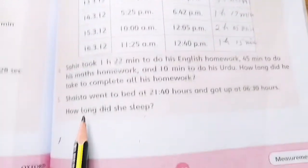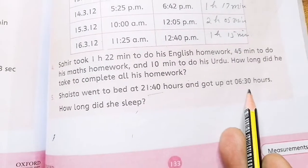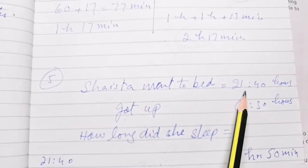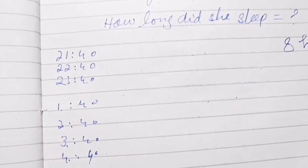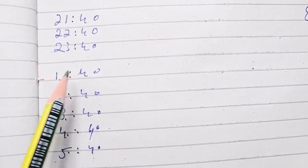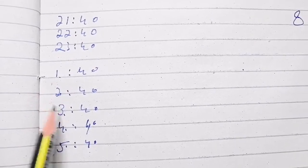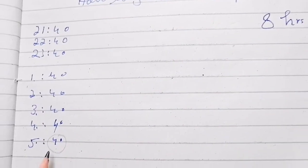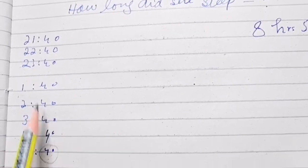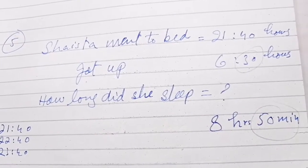Question 5: She went to bed at 2140 hours and got up at 6:30 hours. This uses the 24-hour clock. To find how long she slept, we count: 21, 22, 23 — that is the night time — then 1, 2, 3, 4, 5, 6, giving 8 hours. Then 40 minutes to midnight plus 30 minutes after equals 50 minutes. So she slept for 8 hours 50 minutes.